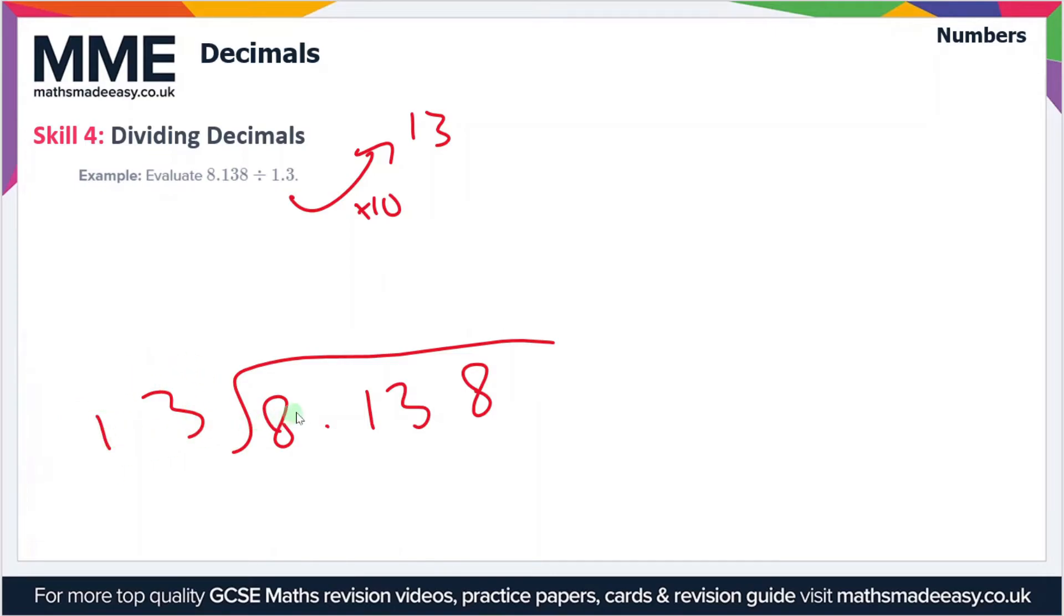First off, how many times does 13 go into 8? The answer is 0, so we carry the 8 forward. So we've got 81 here. How many times does 13 go into 81? The answer is 6. That's 6 times 13 is 78, so 81 minus 78 is 3. That gives us a remainder of 3, so we've got 33 here.